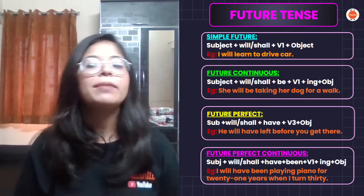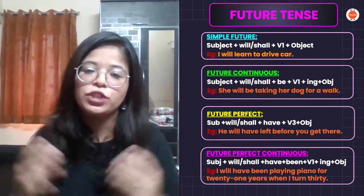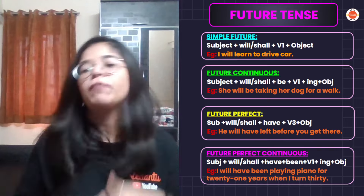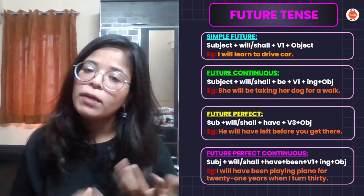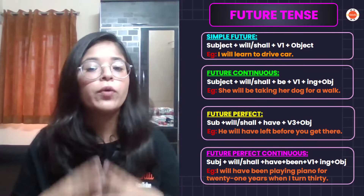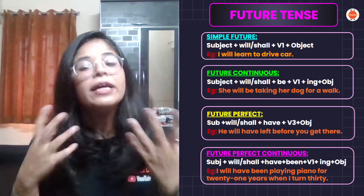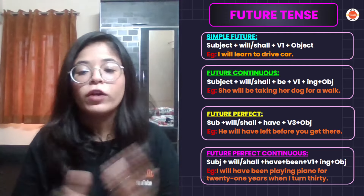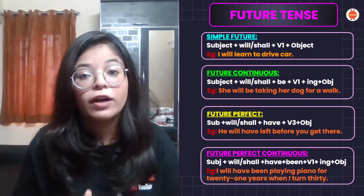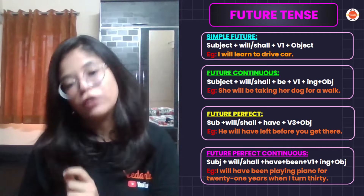The first sub-type is simple future tense. When do you use this? When you talk about future promises, future predictions, or you say that this action will be in the future. For example, I will learn to drive a car. You use the first form of shall or will.